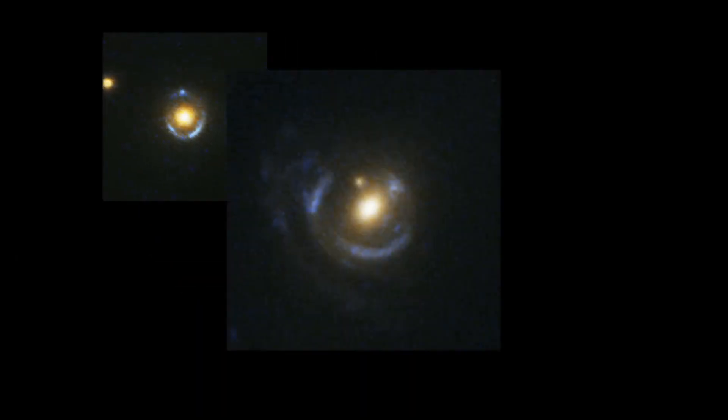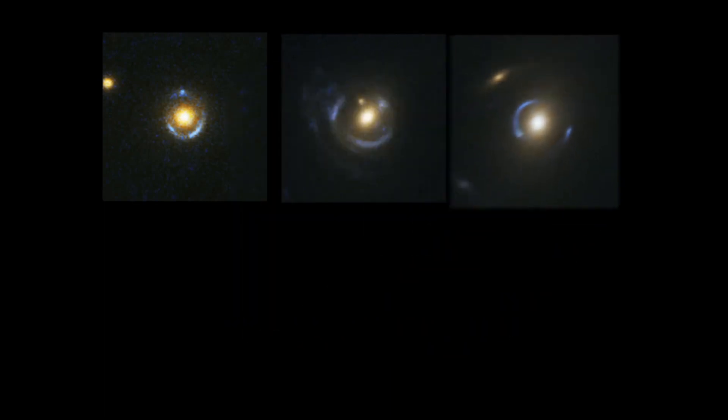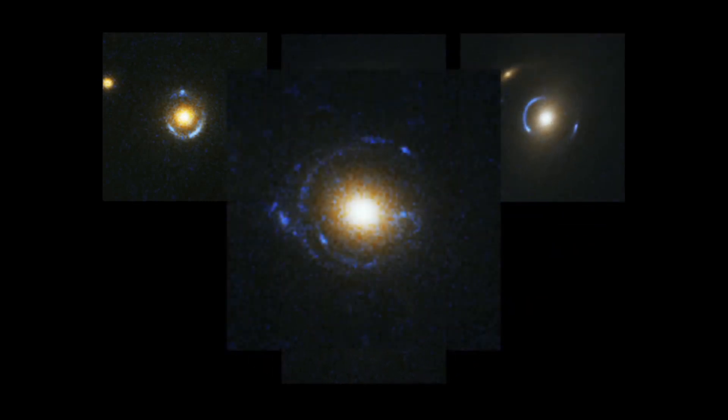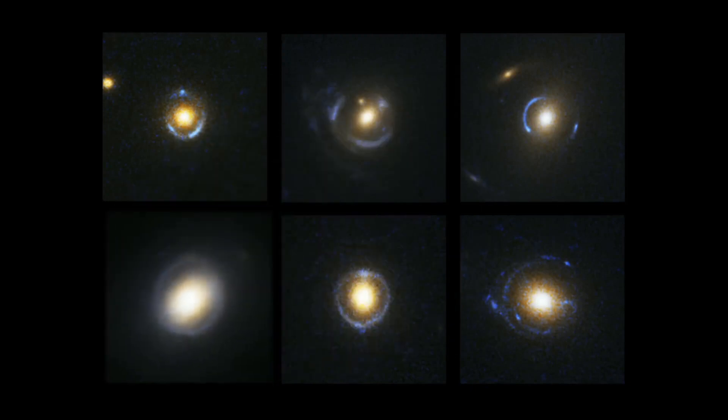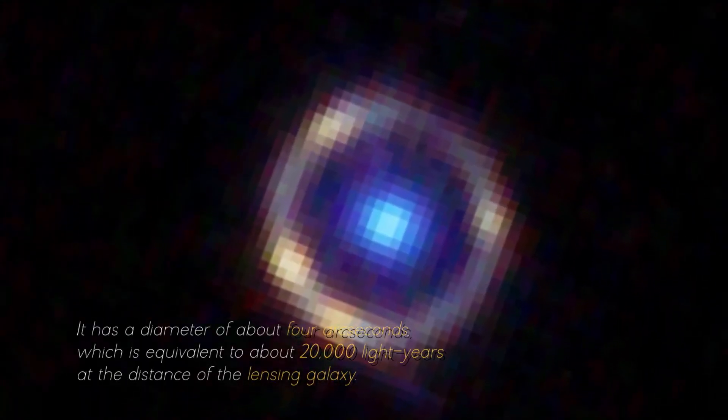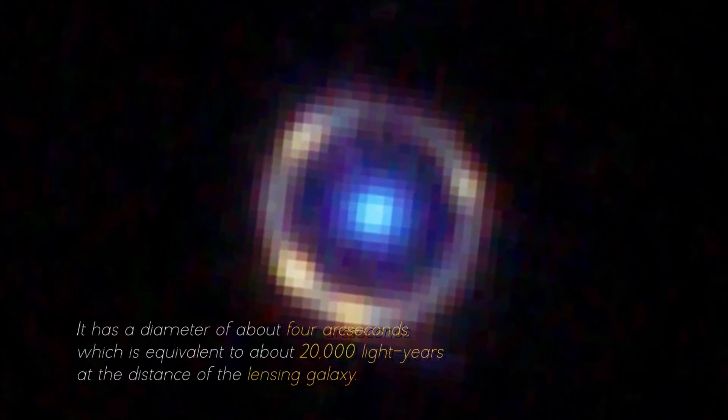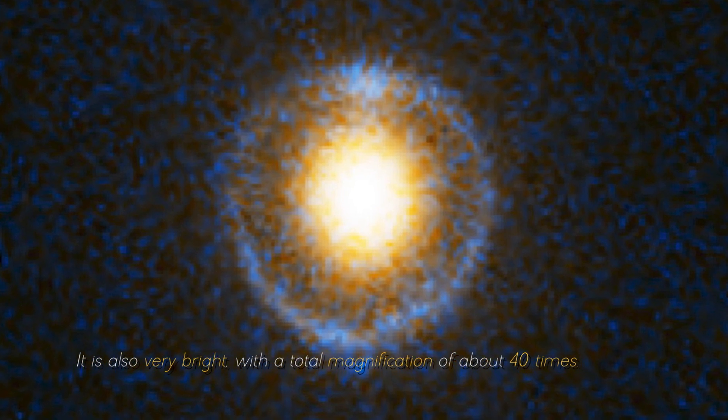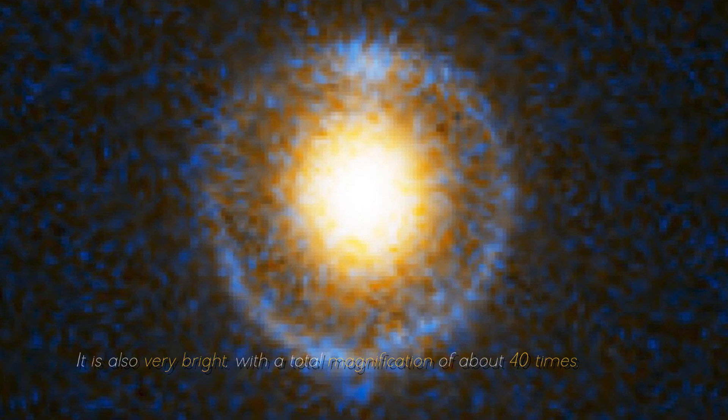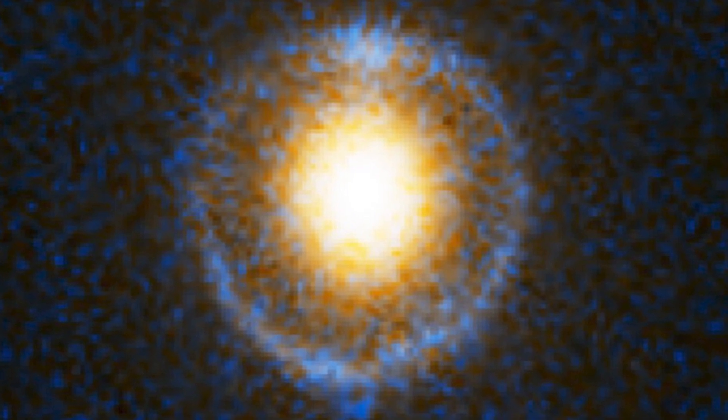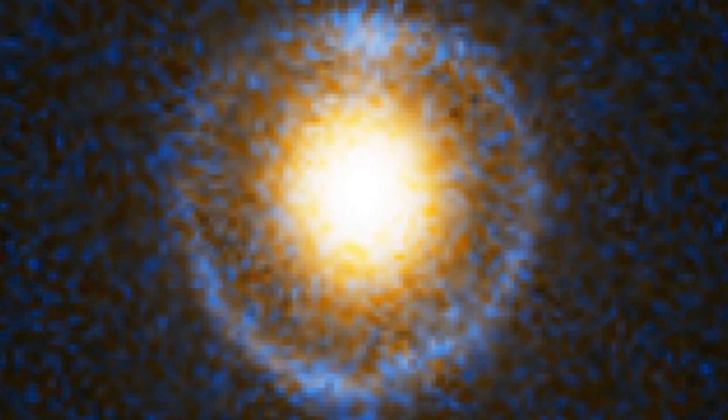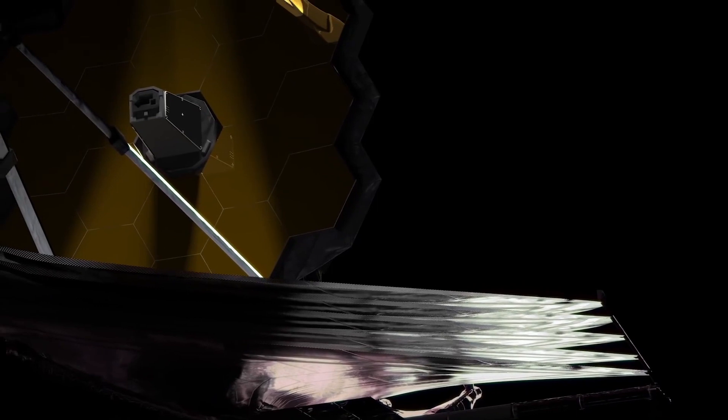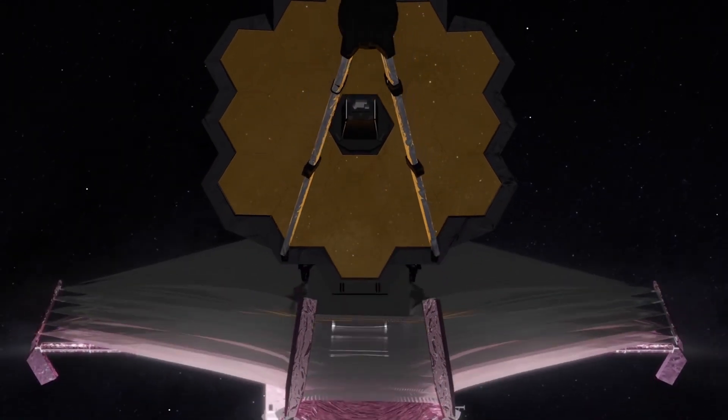In the case we are exploring, the Einstein Ring surrounding this galaxy is one of the most complete and symmetric ever observed. It has a diameter of about 4 arc seconds, which is equivalent to about 20,000 light years at the distance of the lensing galaxy. It is also very bright, with a total magnification of about 40 times. This means that without the gravitational influence, we would not be able to detect the galaxy at rest, as it would be too faint and small to be observed.